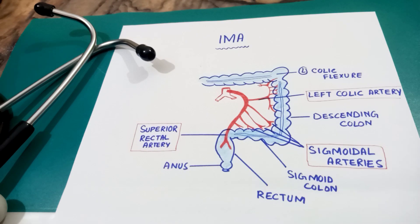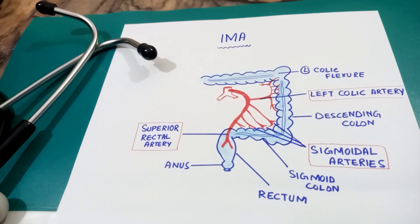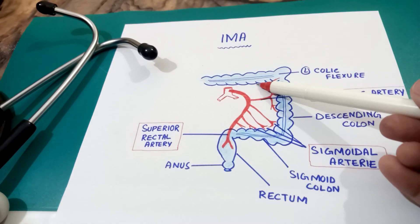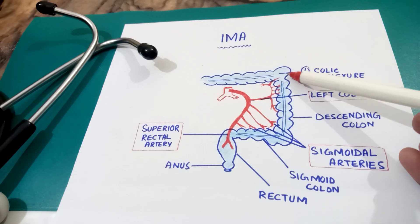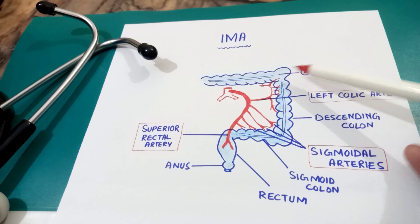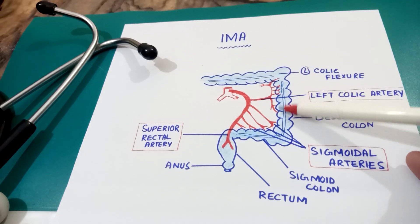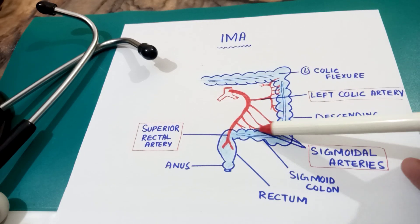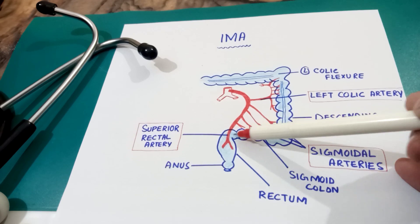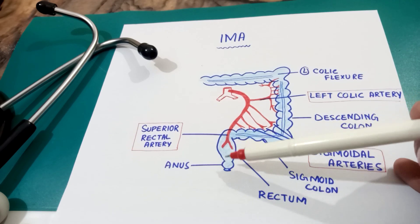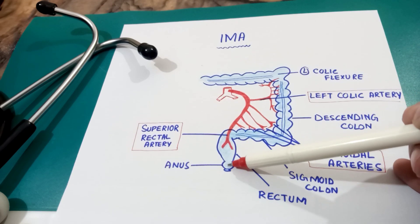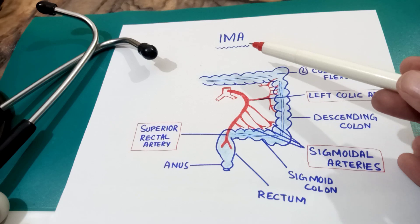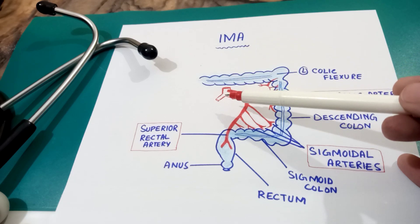Here you can see the transverse colon, the left colic flexure, then the descending colon, sigmoid colon, the rectum, and the anus.